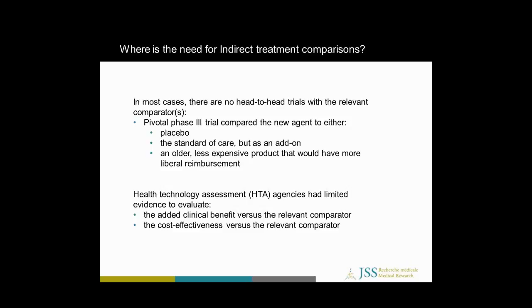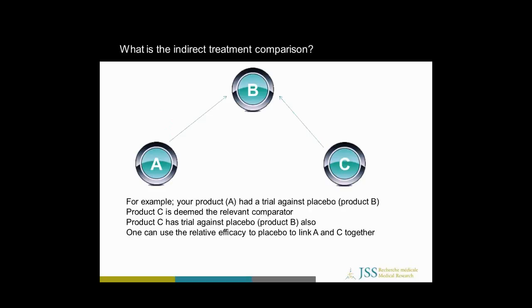In terms of the indirect treatment comparison — to explain it briefly — your product A had a trial against placebo, but product C is deemed the relevant comparator. If product C also has a trial against placebo, one can use the relative efficacy to placebo to link A and C together. For a numerical example: if your product is 40% better than placebo, and the comparator is only 20% better than placebo, then one would expect your product to be 20% better than comparator C.